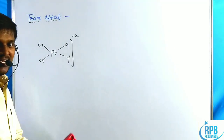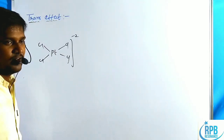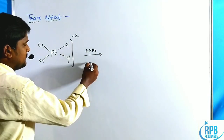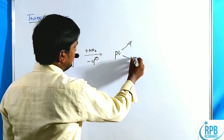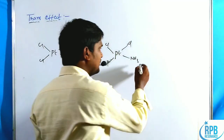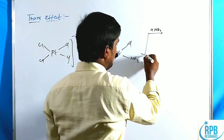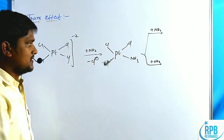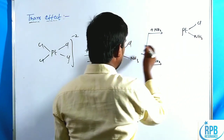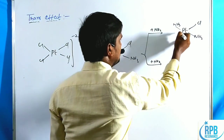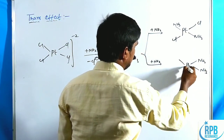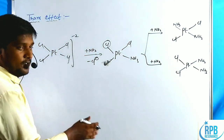Whenever we add one ammonia ligand to PtCl4^2-, one chloride ion is lost, forming Pt(Cl)3(NH3)^-. Then adding another mole of ammonia, it may attack in two possible positions — either giving cis or trans products. Among the four possibilities, only certain products are observed.